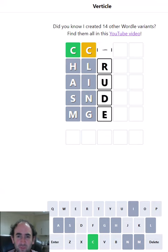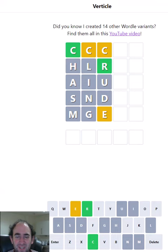Let's try some crude oil. Interesting, so the R is in the third column and it's green, so that means it's the third letter of the word.